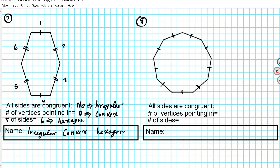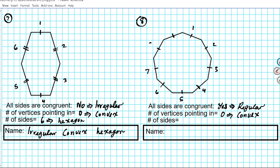Moving along to the last one before we give you some practice problems. All sides congruent? You have exactly one tick mark on all the sides, so all sides congruent — absolutely yes. That means this is a regular polygon. Number of vertices pointing in: all the vertices are pointing out, so there are zero vertices pointing in — this is a convex polygon. If at least one vertex is pointing inward, it's concave. Number of sides: one, two, three, four, five, six, seven, eight, nine. Nine sides means this is a nonagon. So the name of this polygon is a regular convex nonagon.